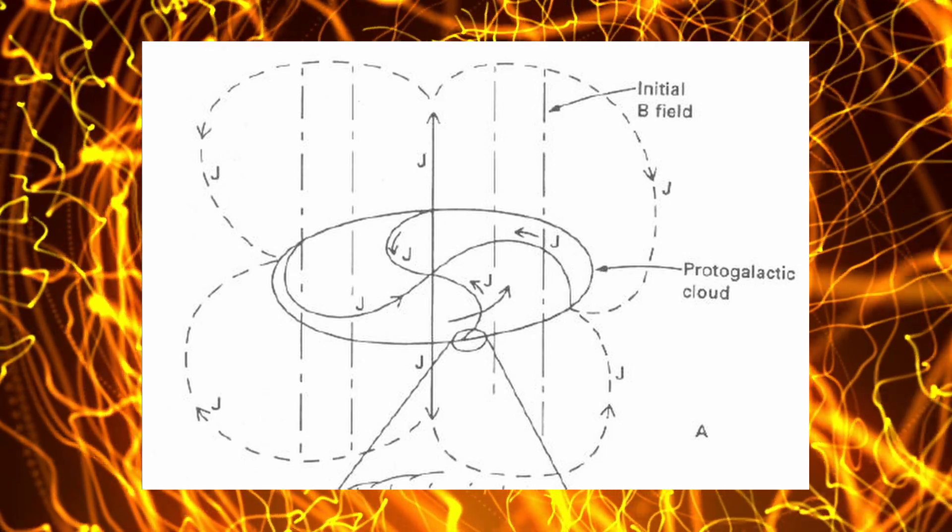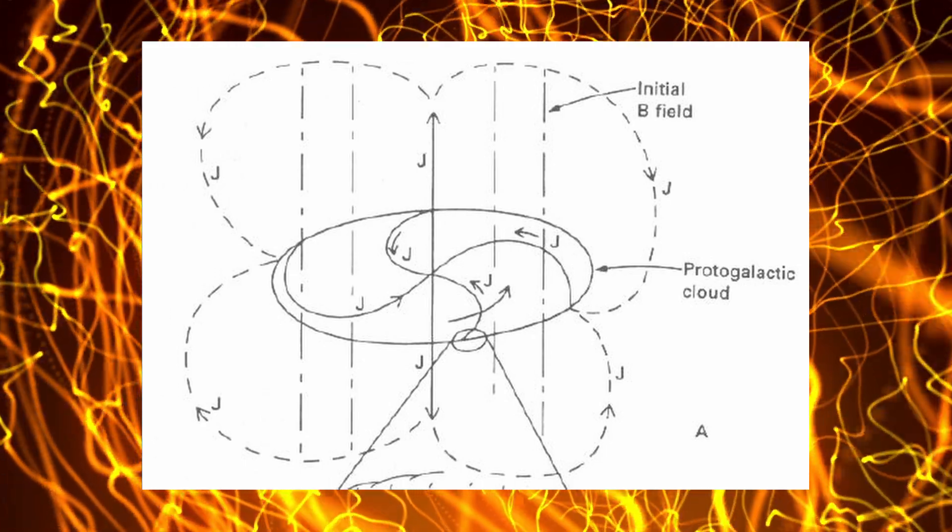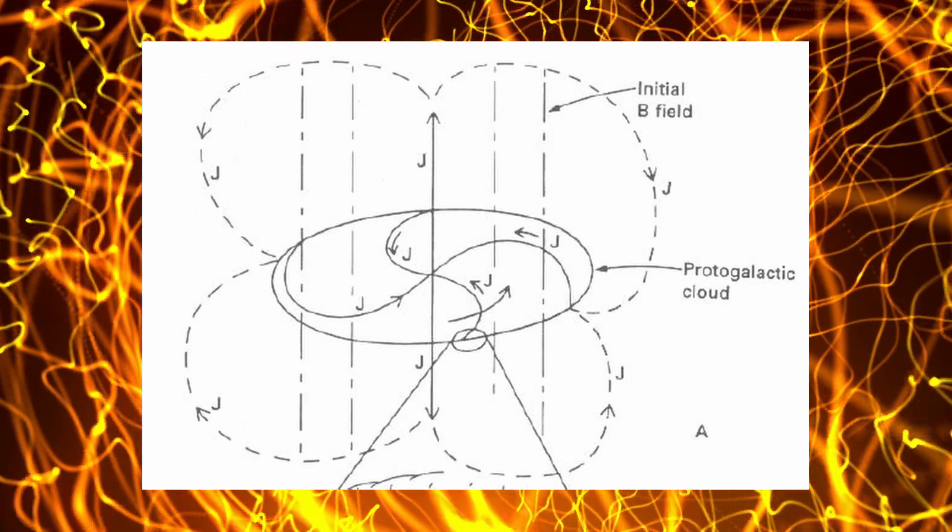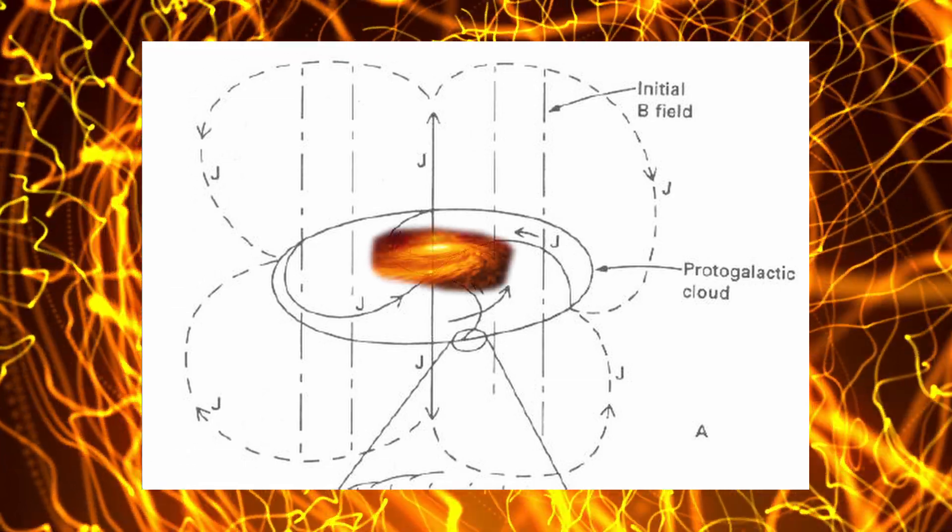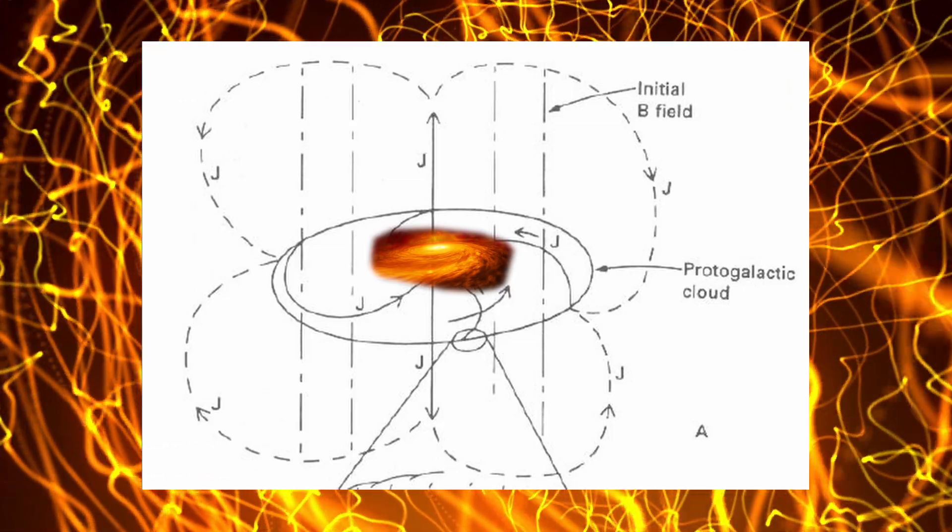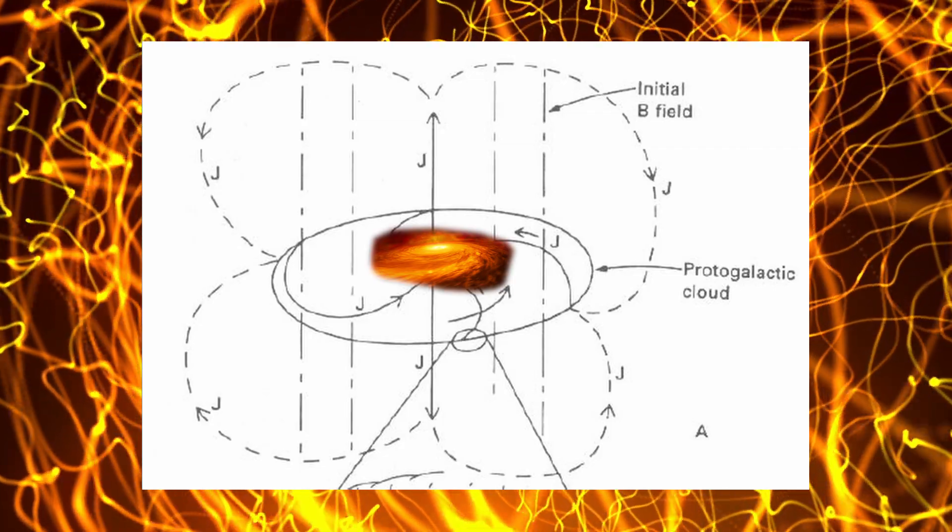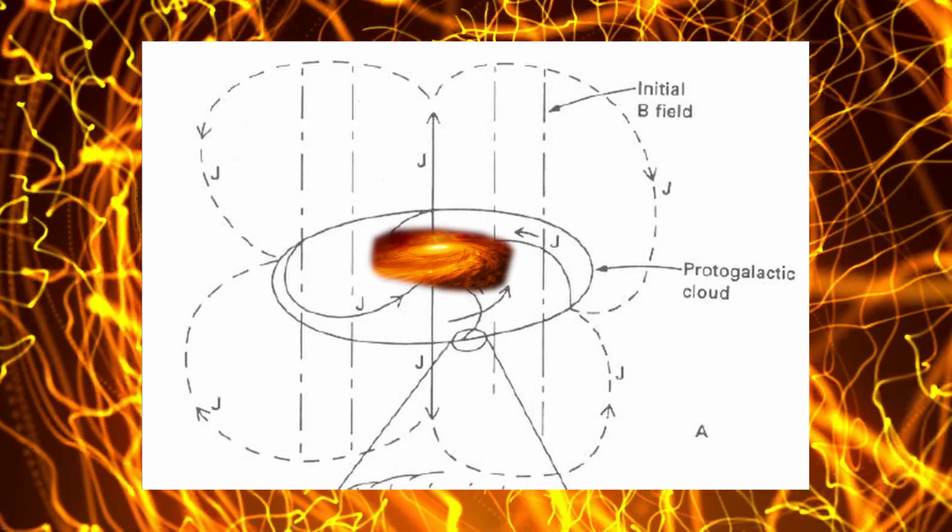This is exactly what we would expect to find as the plasma gets drawn in along the rotation axis. It becomes compressed into a disk, and as we get closer to the center of the object, the disk would become more dense. Now the size of this plasmoid would be much larger than the disk which is visible.